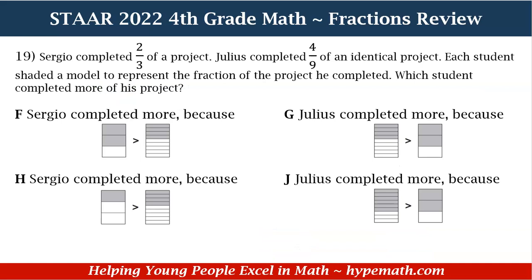Let's dive into our questions. Number 19 says: Sergio completed two-thirds of a project. Julius completed four-ninths of an identical project. Each student shaded a model to represent the fraction of the project he completed. Which student completed more of his project? F: Sergio completed more because two-thirds is greater than four-ninths. G: Julius completed more because four-ninths is greater than two-thirds. H: Sergio completed more because one-third is equal to four-ninths. And J: Julius completed more because four-ninths is greater than two-thirds.